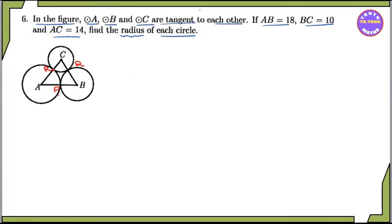The main points of tangency are AP and AR, and BQ and BP are the radii of circle B. CR and CQ are the radii of circle C.